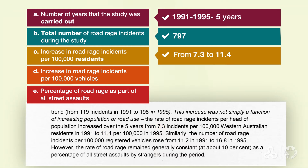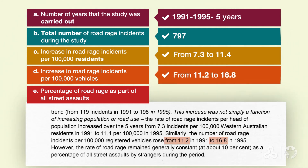Let's go on to D. Now we're looking for the increase in road rage incidents per 100,000 vehicles — the increase in road rage incidents per thousand cars. So again, we're looking for a range, and the answers are from 11.2 to 16.8.